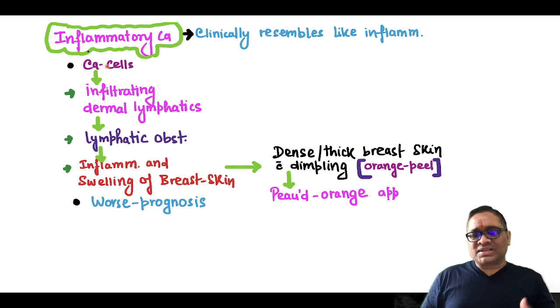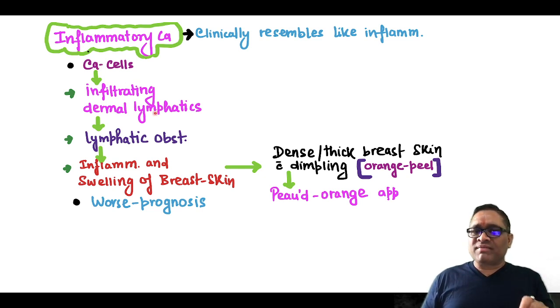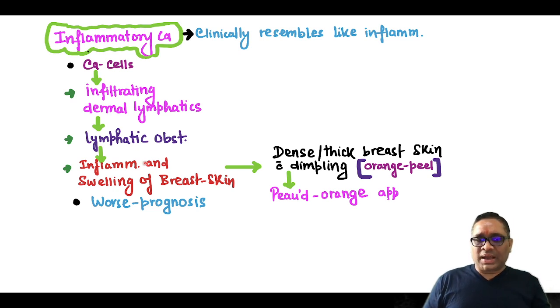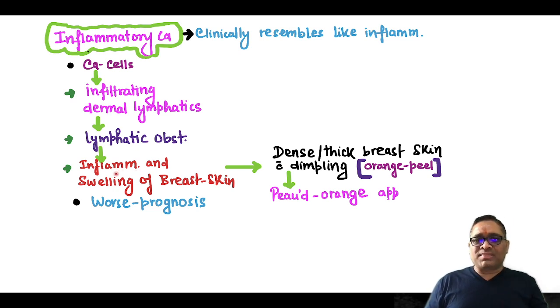Here, what will happen — cancer cells will infiltrate the dermal lymphatics of the breast tissue, which will cause lymphatic obstruction and this will lead to the inflammation and swelling of the breast skin.